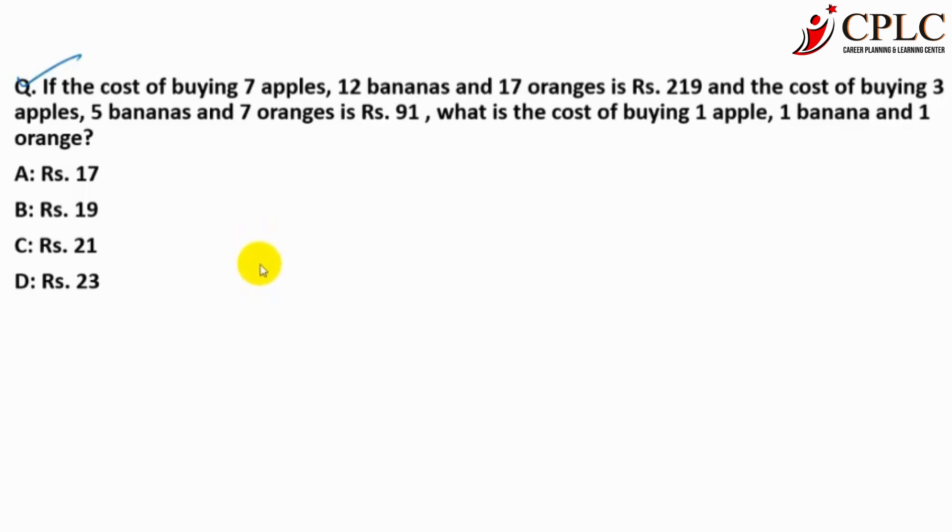How do we calculate the cost of 1 apple, 1 banana, and 1 orange? How many variables can you see over here? There are 3 variables: cost of apple, cost of banana, and cost of orange. So we need how many equations? We need 3 equations, but there are only 2 equations.